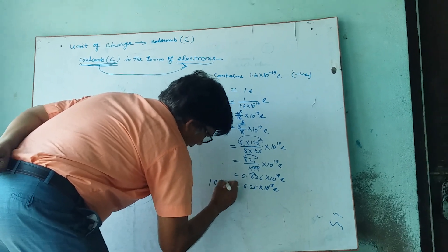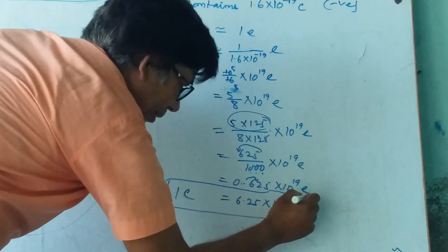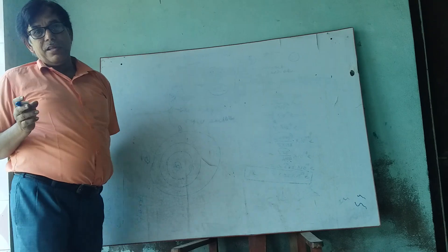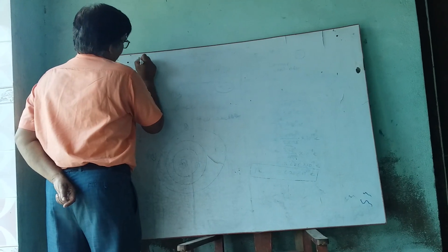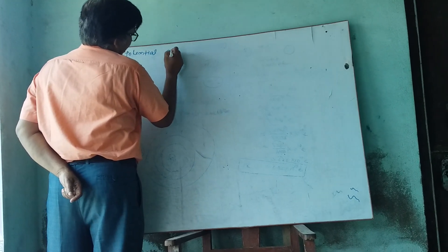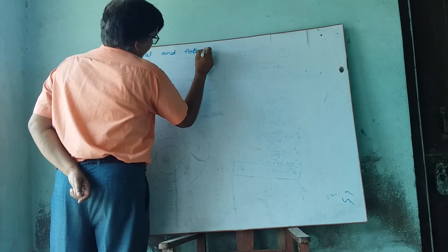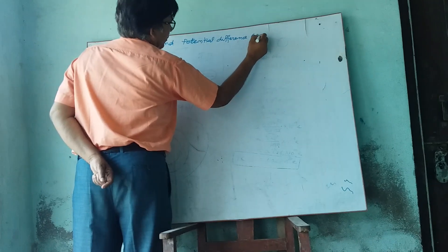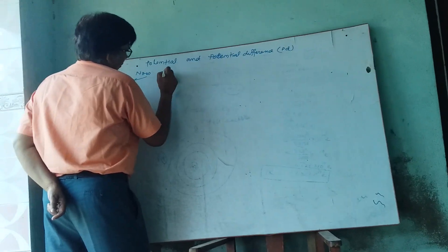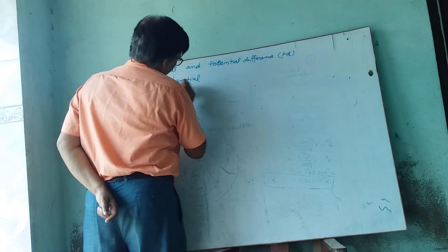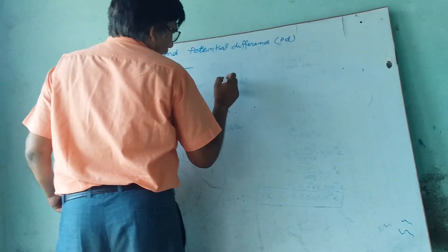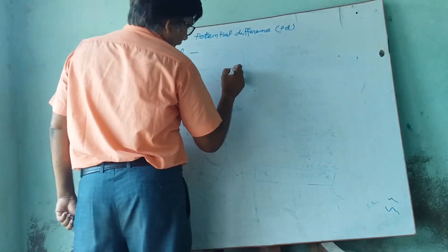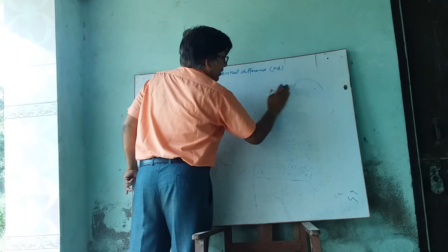Thus, 1 Coulomb is equal to 6.25 into 10 to the power 18 electrons. Now we are going to study potential and potential difference. Potential at a point, or electric potential, can be defined as the work done to bring a charge.